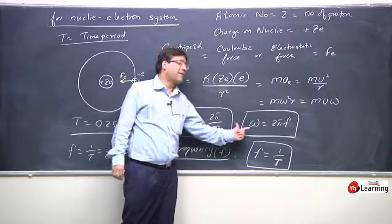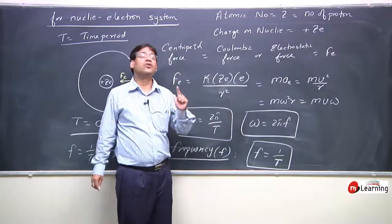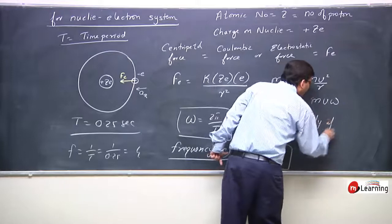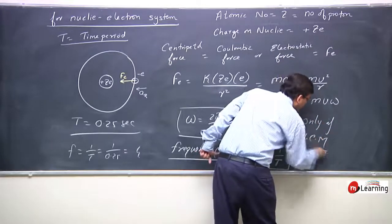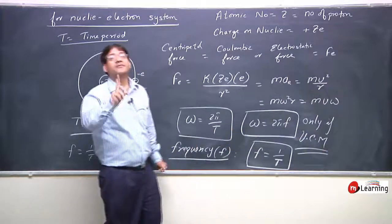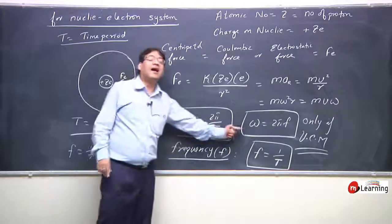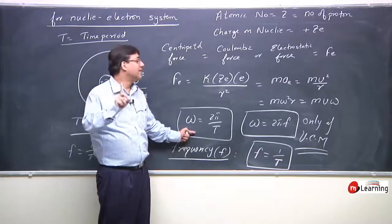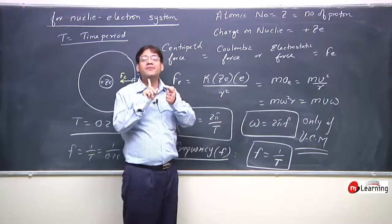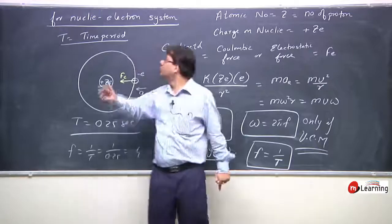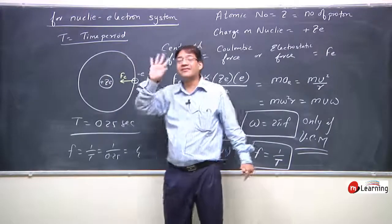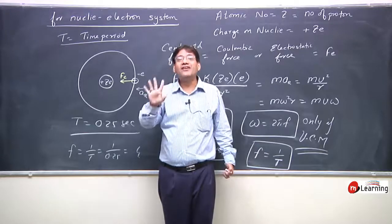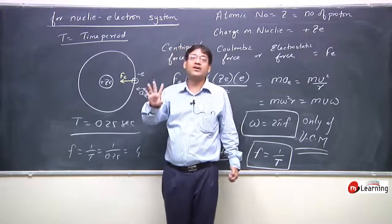This expression for angular velocity — omega = 2π/T or omega = 2πf — holds only for uniform circular motion. If it is not uniform circular motion, then you can never write these two expressions. In the nuclear-electron system as well, the motion is always uniform circular motion.